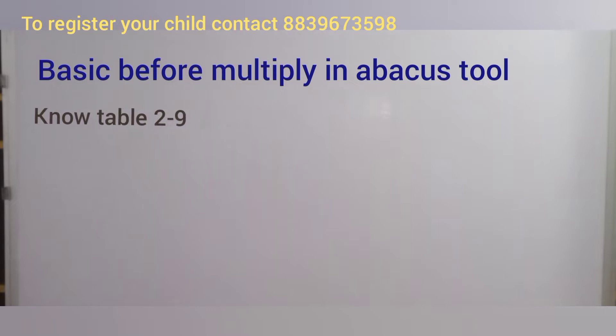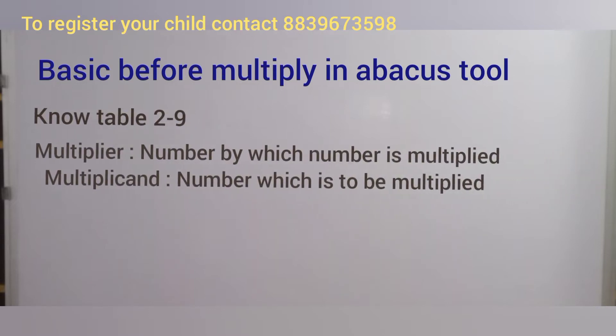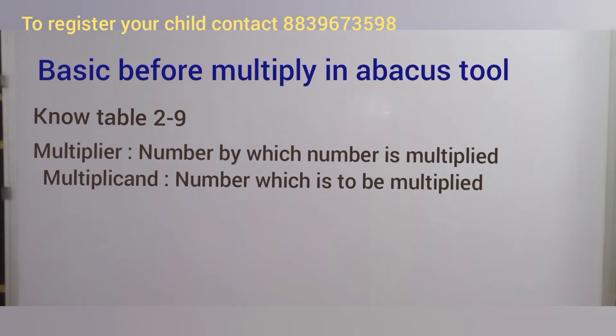Second, understand multiplier and multiplicand. The number by which another number is multiplied is called the multiplier. The number which is to be multiplied is called the multiplicand.